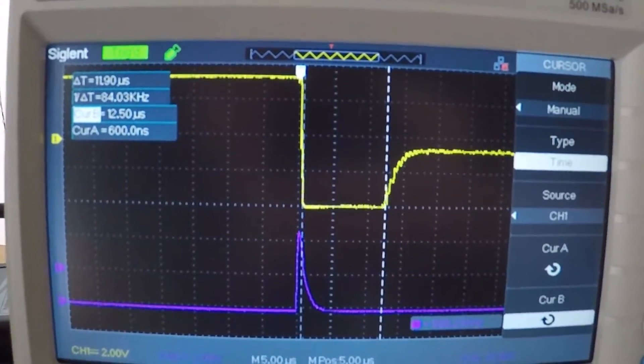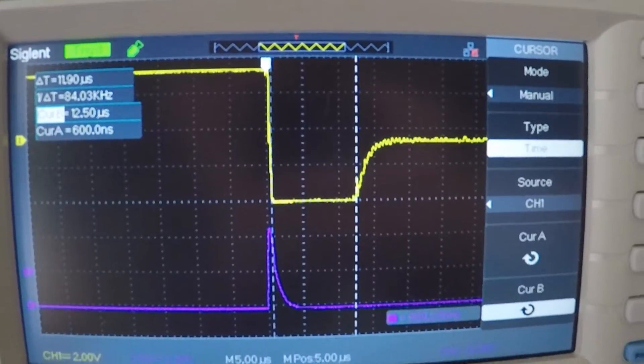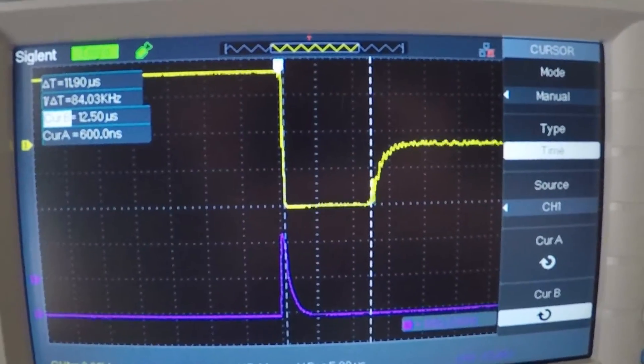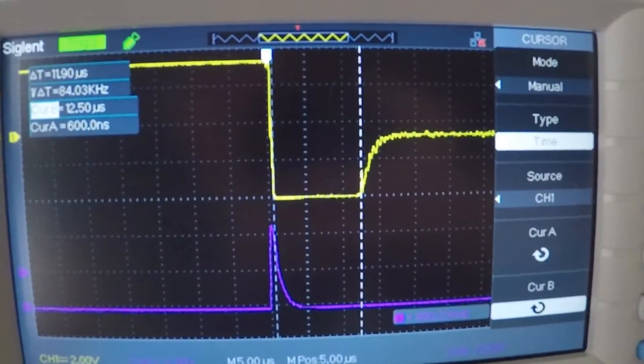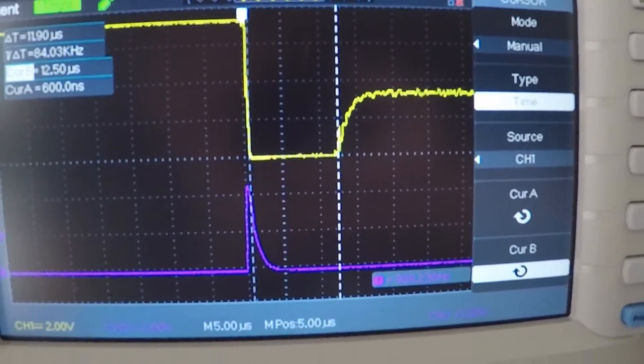Now we're at a delta T of 11.9 microseconds until we start coming out of saturation.